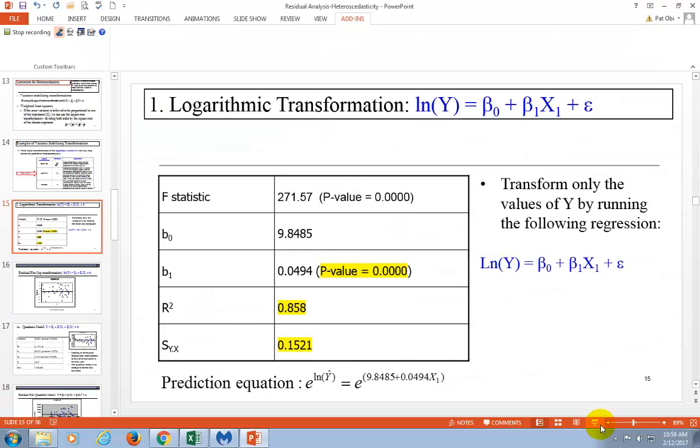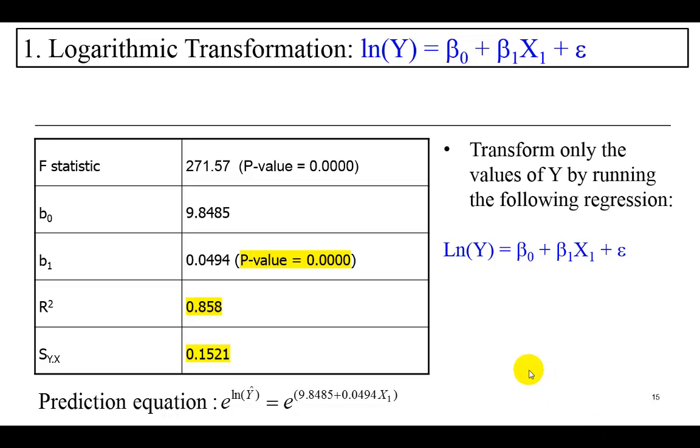The summary of which is presented here. The regression is statistically significant, as we noted earlier. And we find that about 86% of the variation in Y has been explained by X. Because this is log transformed, if you were to use this for prediction purposes, this is actually going to be your prediction equation.